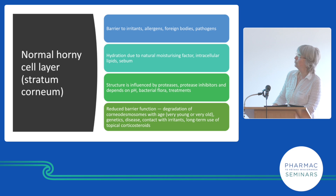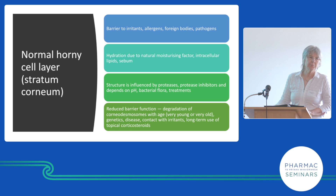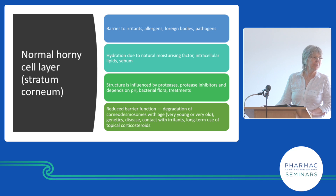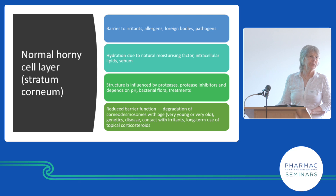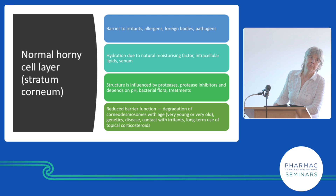A normal stratum corneum is a barrier to irritants, allergens, foreign bodies, and pathogens, but an abnormal stratum corneum may not be good at those functions — so the skin can get dry, infected, or injured. A normal stratum corneum has natural moisturizing factor in it, which is a mixture of proteins and emollients, sebum, things like that.